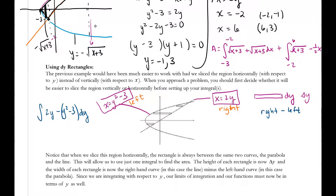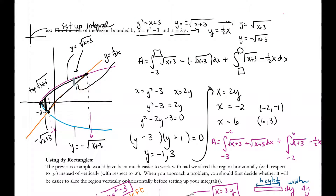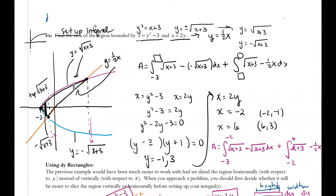These rectangles are laying on their side: their height is the right minus left part and their width is the dy. Just like we stressed at the beginning of this unit, subtracting the functions gives the height and dy gives the width. For dx rectangles, the limits are x-values, the integrand is in terms of x, and we have a dx.